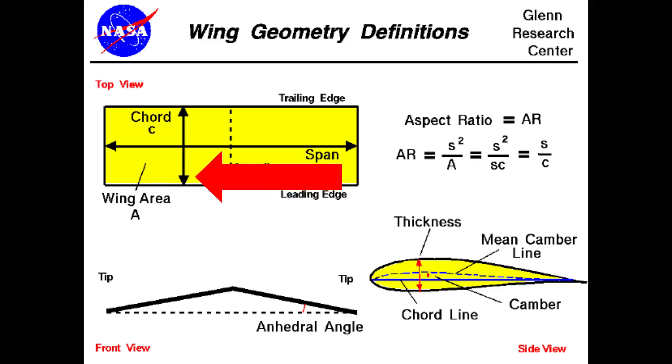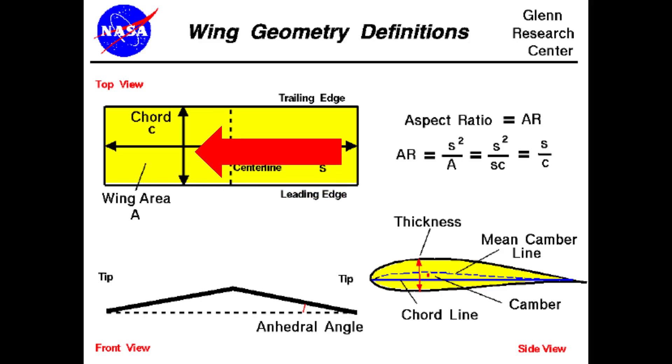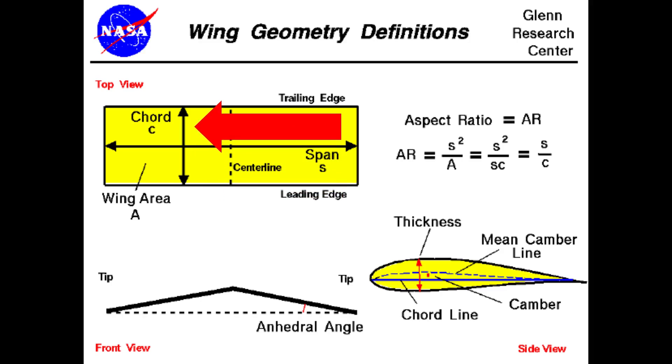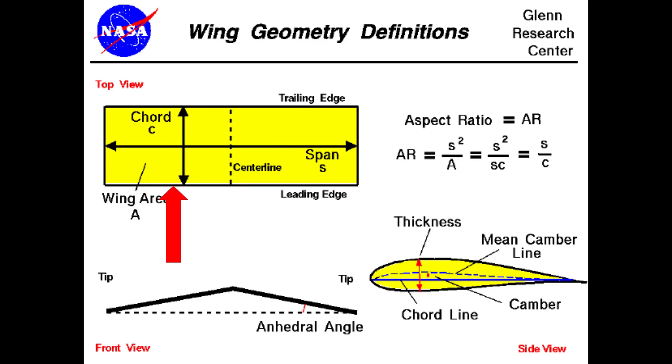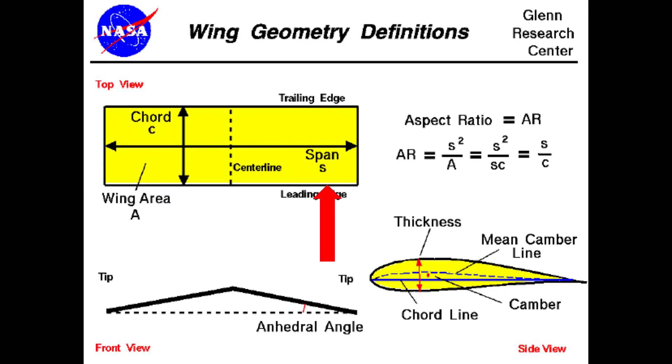To really understand why wings are shaped the way they are, let's first look at some characteristics of wings. First, we have the cord length, or the length from the front of the wing to the back of the wing. Next, the wingspan, or the length of the wing from side to side.